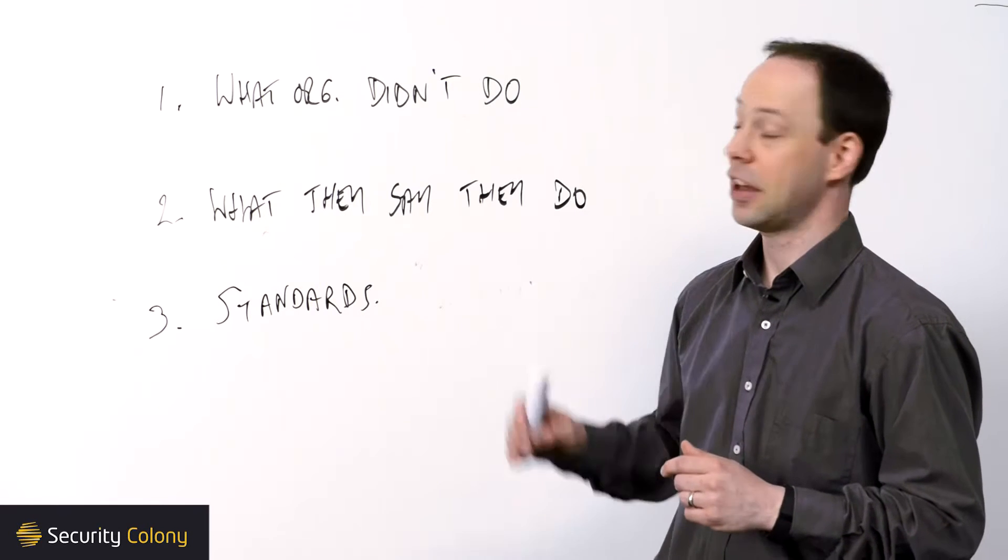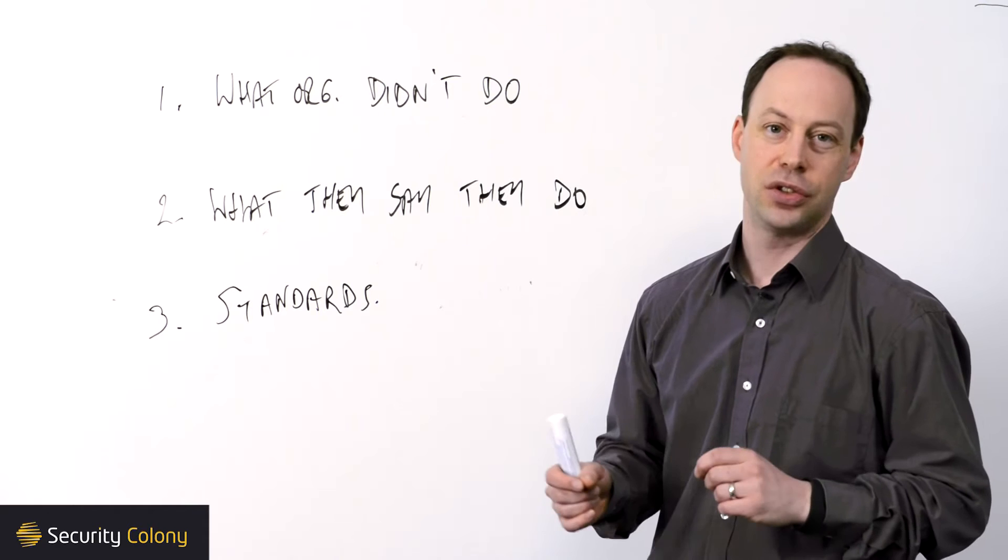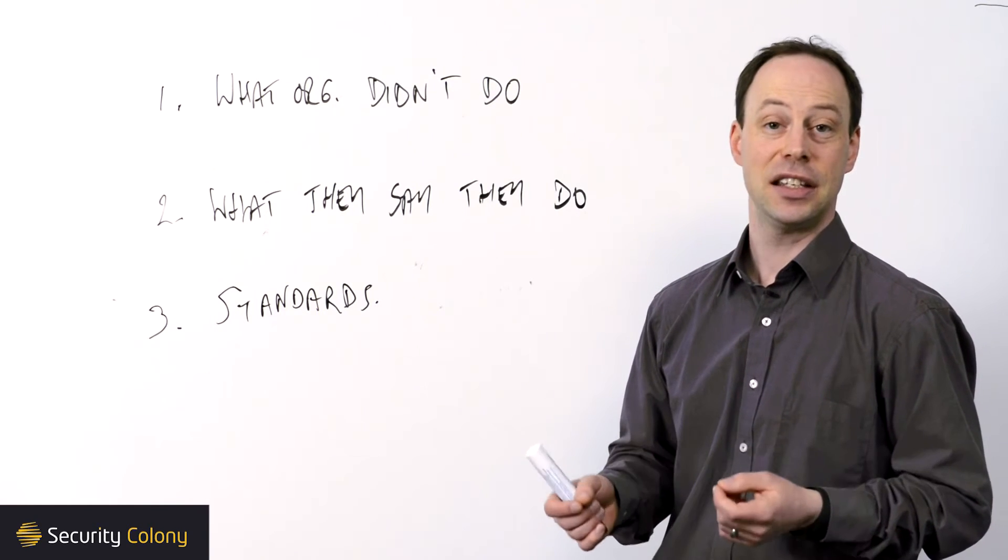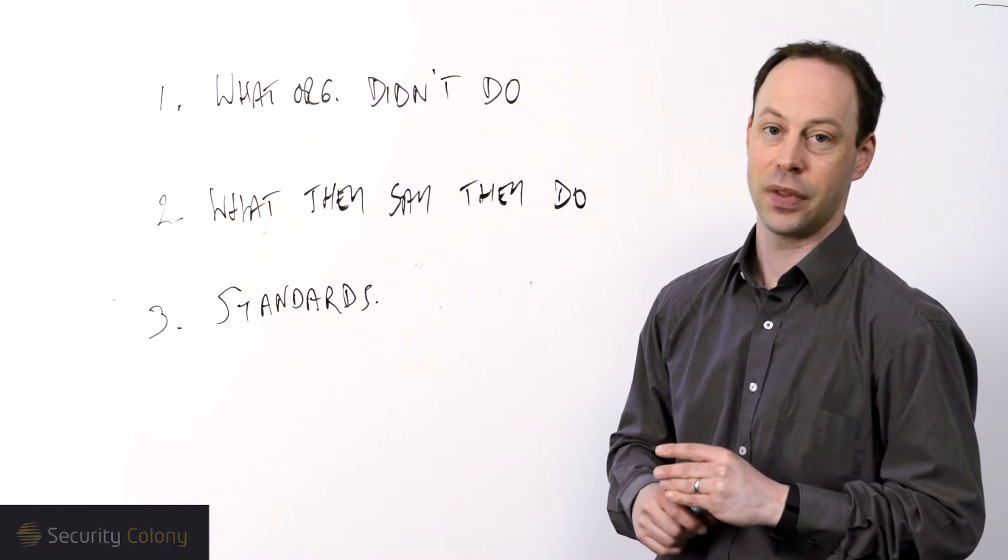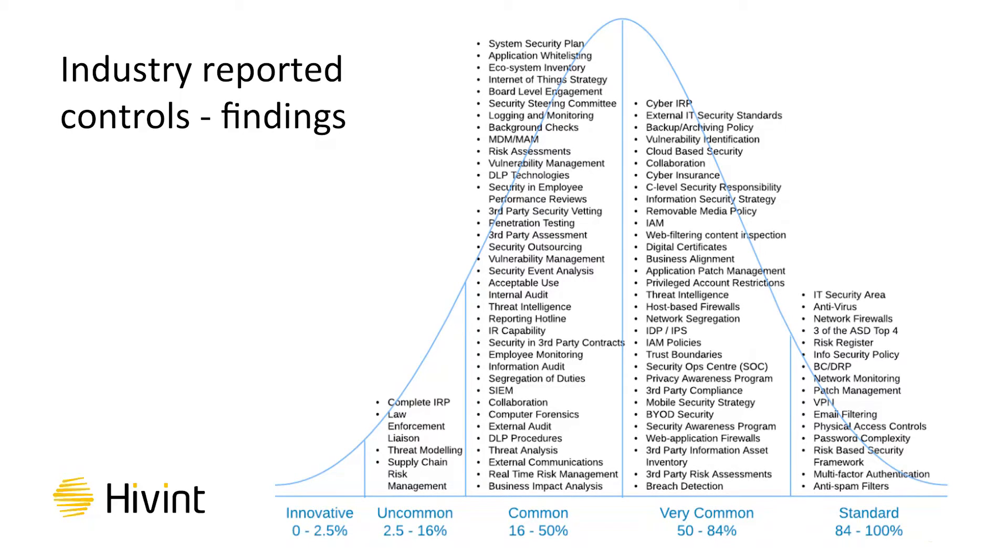Next, I'd like to run through what they say they do. What they say they do is derived from industry surveys where they have statistics on control adoption reported by the organizations who have responded to the survey. There'll be a slide up on the screen now that provides some of the analysis of this data. What you'll see when you look at this data is that a huge number of controls exist in either the very common or the standard sections of the bell curve. What this suggests is that a lot of controls are considered commonplace, but in reality, there is no doubt a disconnect between what's said to be done and what is actually being done by most organizations.